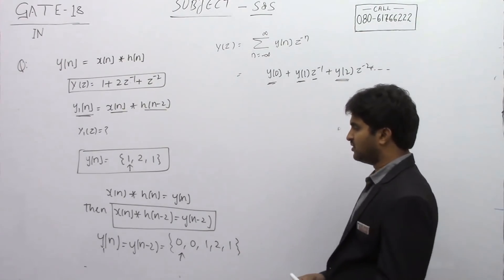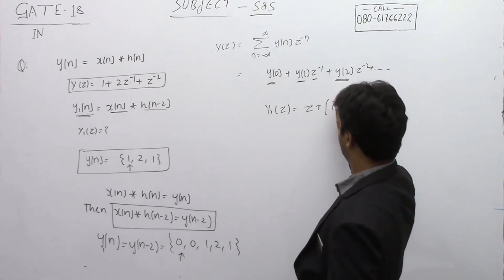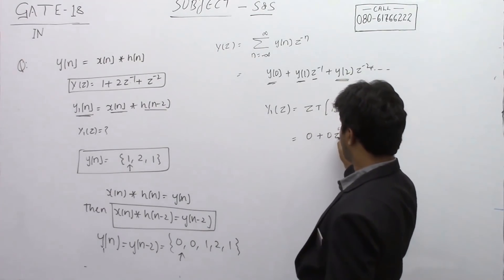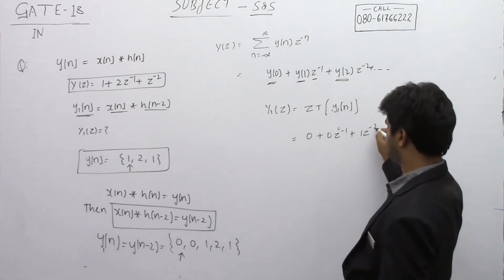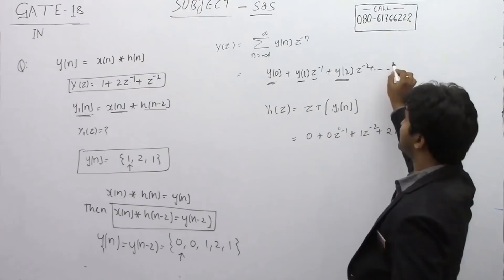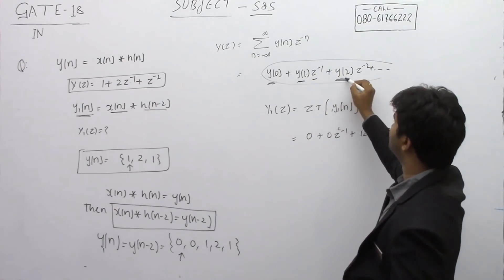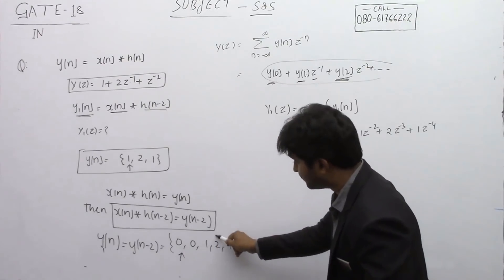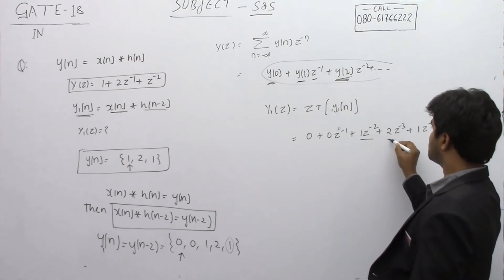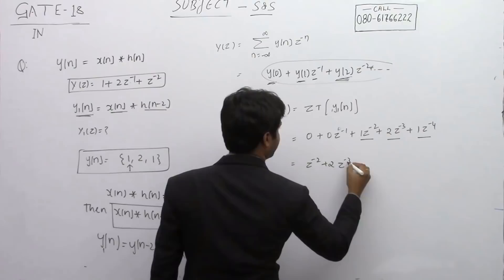Once we know y1(n), we can directly write Y1(z), the Z-transform of y1(n). It equals 0 plus 0·z⁻¹ plus 1·z⁻² plus 2·z⁻³ plus 1·z⁻⁴. Since y(2), y(3), y(4) are non-zero and the rest are zero, Y1(z) simplifies to z⁻² plus 2z⁻³ plus z⁻⁴.